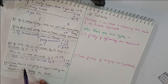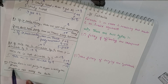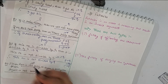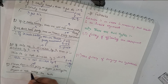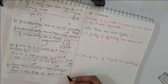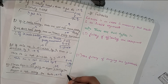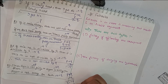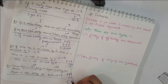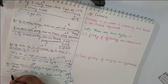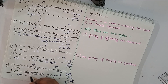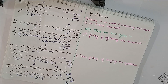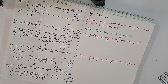Question 4 says: either Ram is not guilty, or Shyam is telling the truth; and Shyam is not telling the truth. Let P = Ram is not guilty, Q = Shyam is telling the truth. 'Not telling the truth' is negation of Q. According to Disjunctive Syllogism, P or Q and negation of Q concludes P. So the answer is: Ram is not guilty.